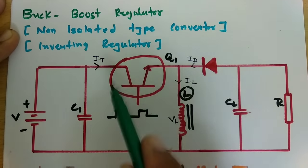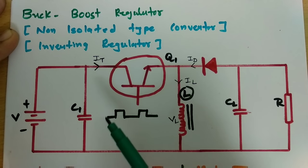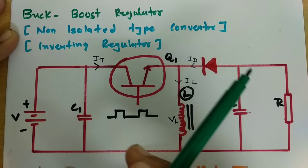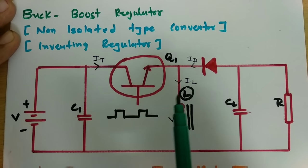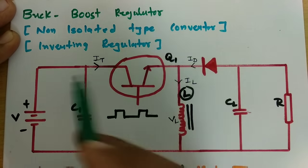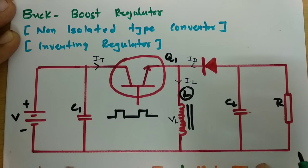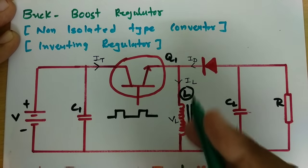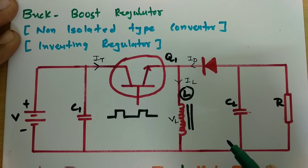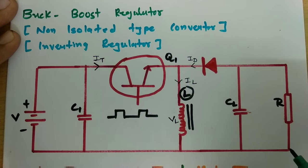Based on working alone one cannot understand how it is a buck converter or boost converter, but once we derive the voltage we can understand how it works as a buck or boost converter. In this session my agenda is to explain how this buck-boost converter functions. The working is subdivided into three parts: mode one operation, mode two operation, and mode three operation.